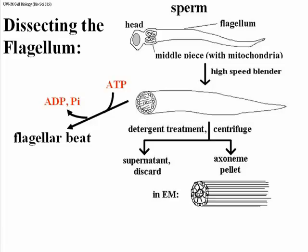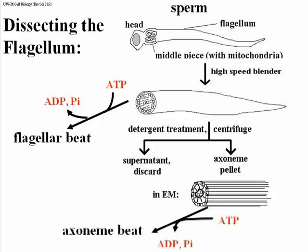You can resuspend the structure called the axoneme — the inner microtubular component of a flagellum or cilium — and look at it in the electron microscope. If you add ATP, it is hydrolyzed and the free energy enables the axoneme to beat. Without the membrane, that beat is a little jerky and not quite as smooth as in the flagellum itself, but it definitely whips around. You can then use different detergents and chemical treatments to break the axoneme apart or remove components, actually separating the microtubules into single and doublet microtubules.